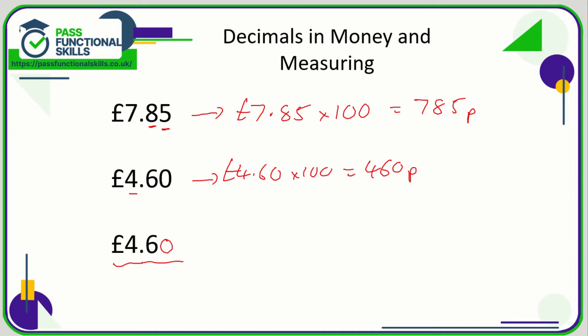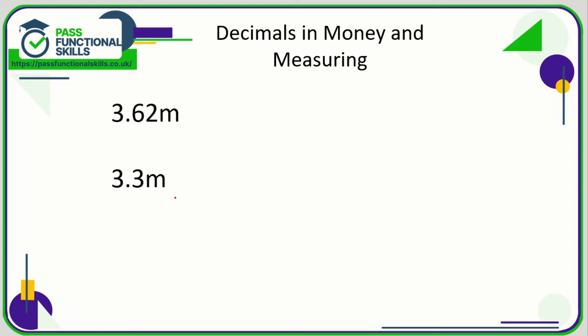You also see decimals a lot in measurements. So here we have 3.62—again, note how I'm saying six two rather than sixty-two. 3.62 meters, that is 3 meters and 62 centimeters, otherwise known as 362 centimeters. If you want to convert meters into centimeters, then just multiply this number by 100 because there's 100 centimeters in a meter.